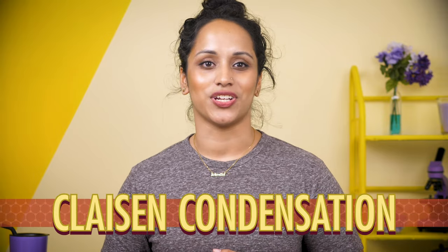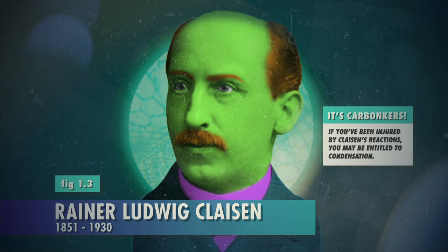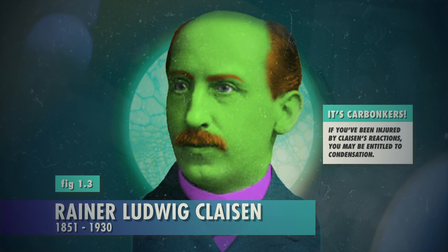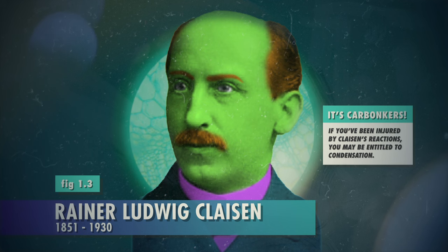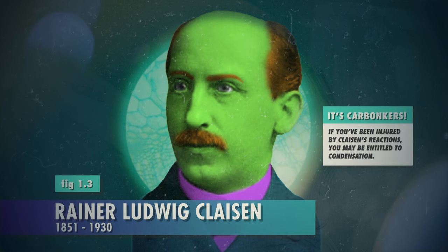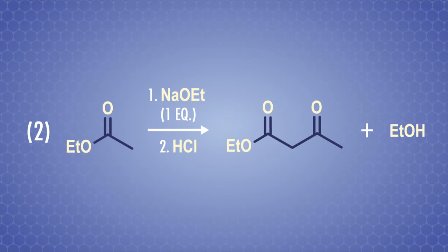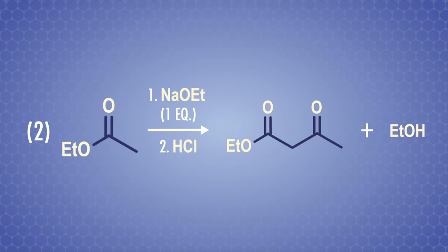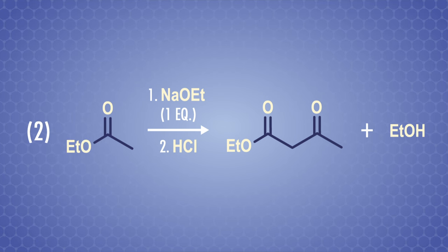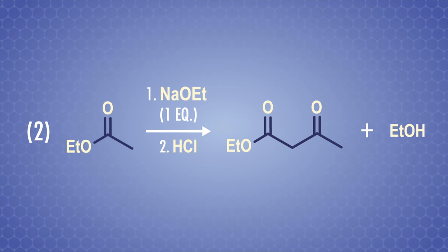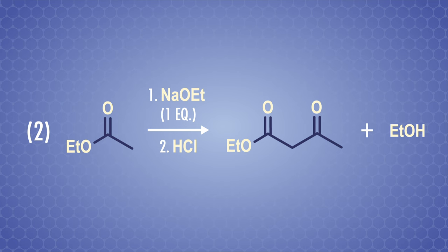As exciting as penicillin is, there's another reaction we still have to cover — the Claisen condensation. It's named after the German chemist Rainer Ludwig Claisen. He was born in 1851, began studying chemistry in 1869, was a military nurse, and then returned to academia and worked in Kekule's lab for a while — yes, Kekule the benzene guy. In the Claisen condensation, an ester joins with either another ester or another carbonyl compound in the presence of a strong base. Once again, we're making a carbon-carbon bond.